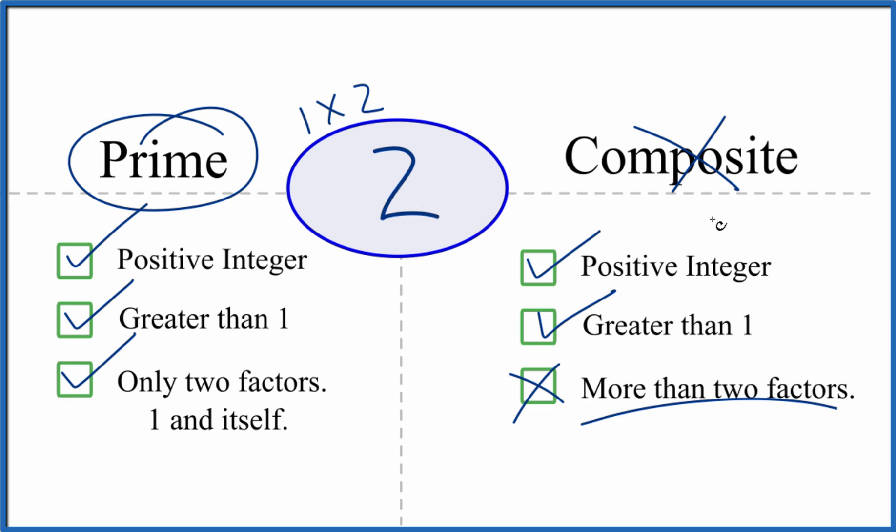So that's how you figure out whether numbers are prime or composite. This is Dr. B, and thanks for watching.